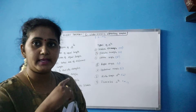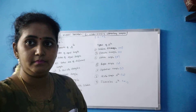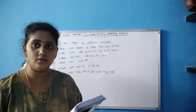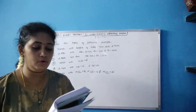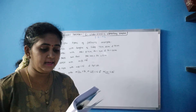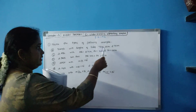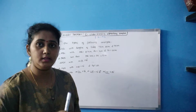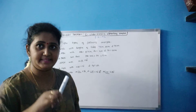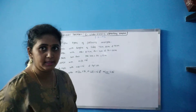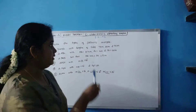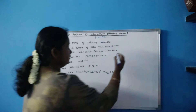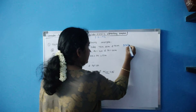Now let's move on to the first sum. Name the types of following triangles. First one: a triangle with sides 7 cm, 8 cm and 9 cm. All three sides are of different length, so it is a scalene triangle. Second: triangle ABC with AB = 8.7 cm, AC = 7 cm and BC = 6 cm — here also all sides are of different length, so again it is a scalene triangle.